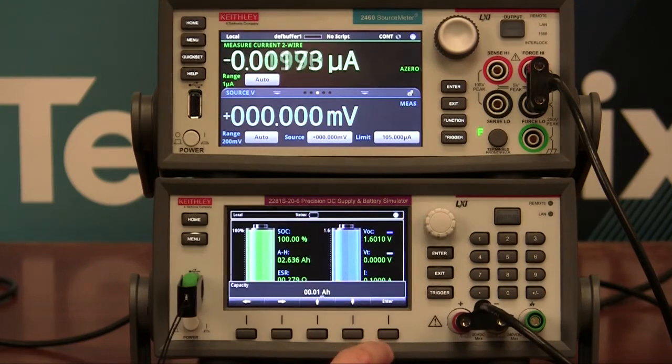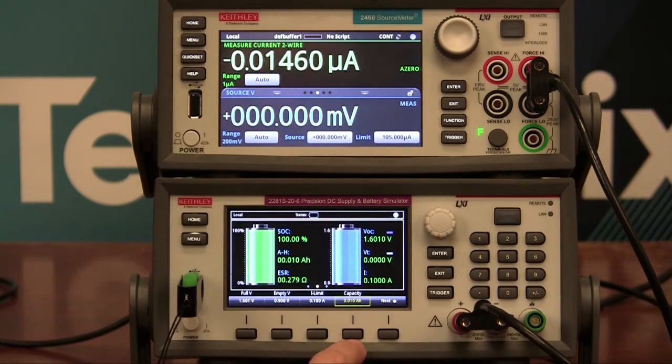Press Enter. So now we have a really low capacity battery that we can discharge very quickly with the source meter.